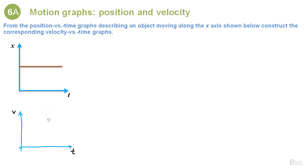How do we construct the velocity versus time graph from the position versus time graph? First, you need to know that the definition of velocity is the change in position over time — velocity measures how much the position changes when time changes. In this particular case we have a completely horizontal line, meaning the position is not changing; it's the same all the time. This describes an object at rest, so its velocity is zero. Over that period, velocity will be a straight line fixed at v equals zero.